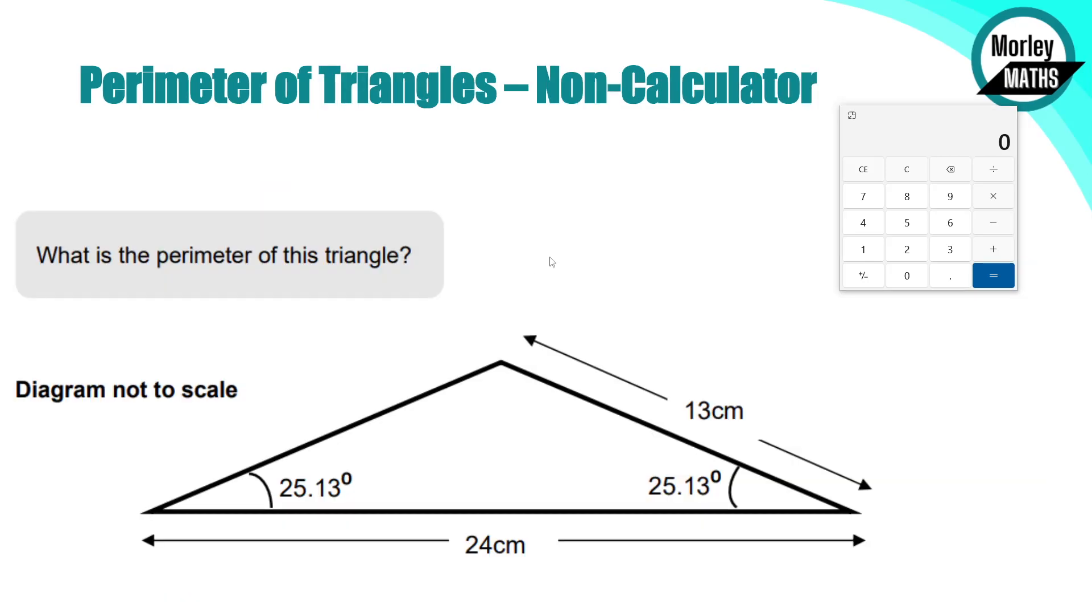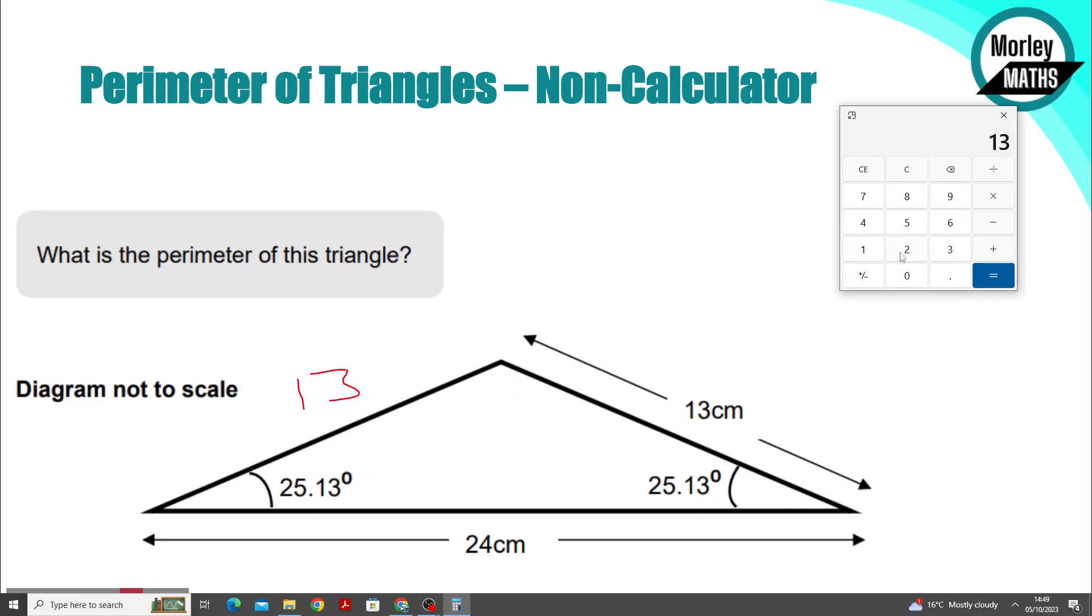With regards to triangles, you need to have an understanding of triangles and how you'd be able to work it out. This particular exam question is from City and Guilds. It's given you a 24 centimeter long base and one edge of 13 centimeters with two matching angles. Because these two angles match, these two lengths will be the same as well. So this other one is also 13. We can just add 13 plus 13 plus 24, and we've got our perimeter of 50 centimeters around this triangle.